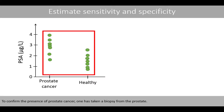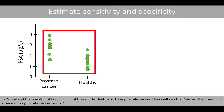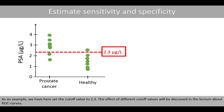To confirm the presence of prostate cancer, one can take a biopsy from the prostate. The aim is to see how well a simple blood test for PSA can identify prostate cancer. Let's pretend that we do not know which of these individuals have prostate cancer — how well can the PSA test predict if a person has prostate cancer or not? In order to estimate the sensitivity and specificity of the PSA test, we need to set a cutoff value. As an example, we have set the cutoff value to 2.3. The effect of different cutoff values will be discussed in the lecture about ROC curves.